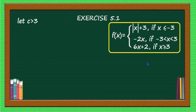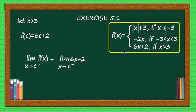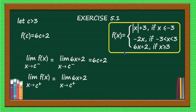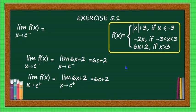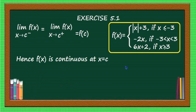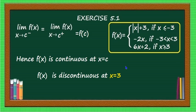For Case 5, c > 3: f(c) = 6c + 2. The limit as x → c of 6x + 2 = 6c + 2. Since the limit equals the value of the function, f(x) is continuous at x = c. Thus, the function is continuous everywhere except at x = 3. f(x) is discontinuous only at one point, that is x = 3.